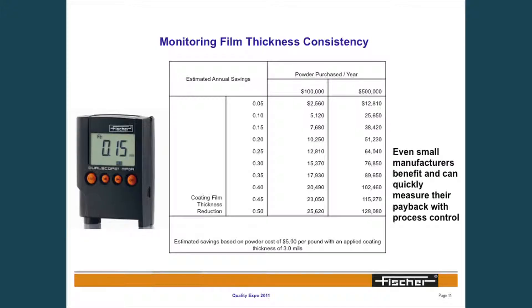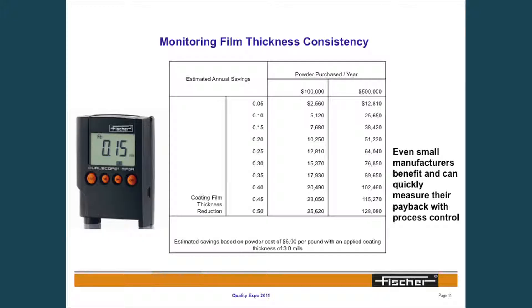I read an article back in 1998 and the light bulb really went off for me as far as why monitoring film thickness or plating thickness is important. It showed that if we control our process by as little as one-tenth of a mil, a $500 investment in one of these instruments could save us $25,000 in a year. In these economic times, controlling material costs could be the difference in whether our companies survive. I've seen a real strong focus on companies controlling their tolerances and process control — this is a good example of what you can achieve with a relatively inexpensive investment in instrumentation.